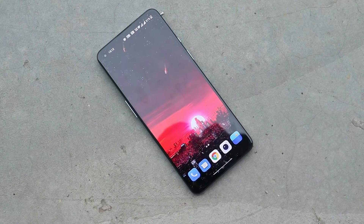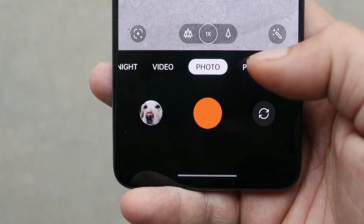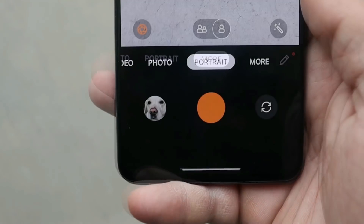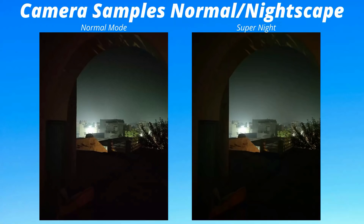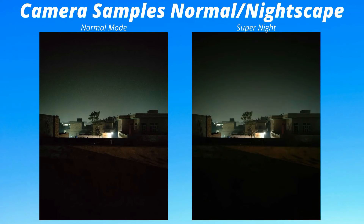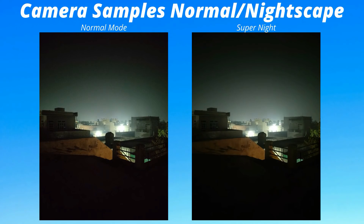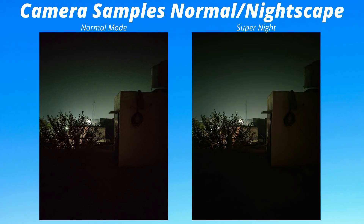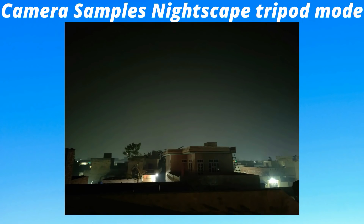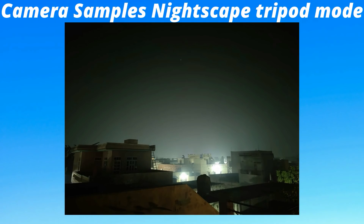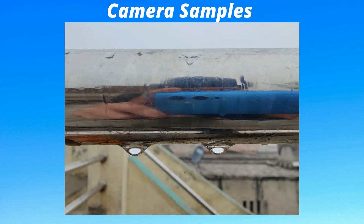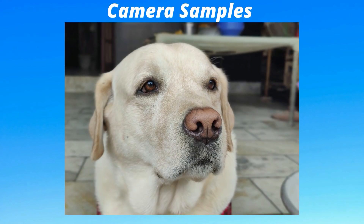I'm not covering much of the camera segment because there are no significant changes compared to the previous build — the results are similar. As mentioned in my previous review, night mode on OxygenOS 12 wasn't performing great, and that remains the case here. Side-by-side photos taken in normal mode and night mode show no major difference; only slight noise reduction is visible in Nightscape mode. All photos were taken via tripod in normal lighting. Performance is decent but OnePlus needs to improve a lot on the camera.